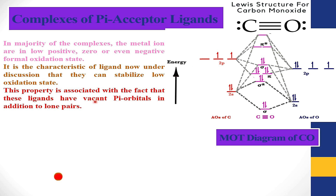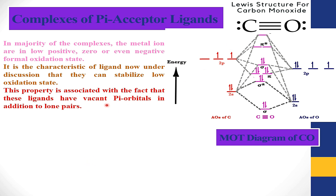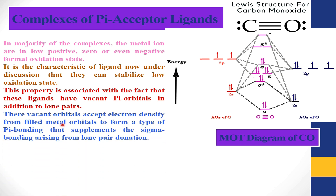This makes carbon monoxide a pi acceptor ligand because it contains vacant pi orbitals. The molecular orbital diagram of carbon monoxide explains the presence of these vacant pi star orbitals. These vacant orbitals accept electron density from filled metal d-orbitals to form a type of pi bonding that supplements the sigma bonding arising from lone pair donation.